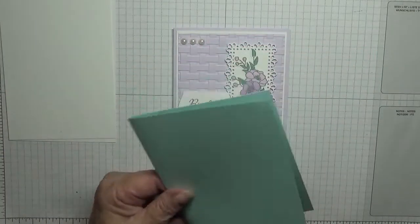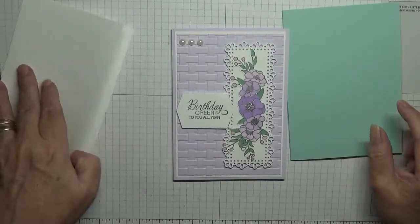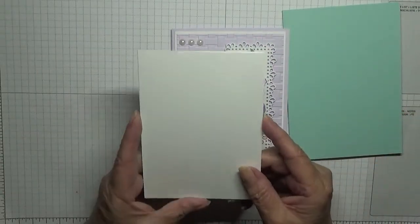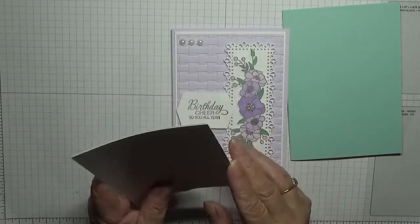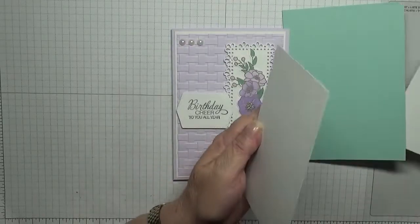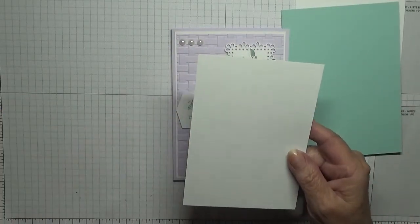Two pieces of white cardstock at five and five eighths by three and seven eighths, one for the inside and one for the top. I have got another piece of Pool Party at five and a half by three and three quarters.